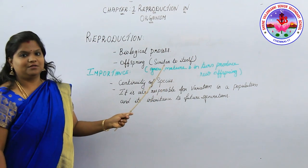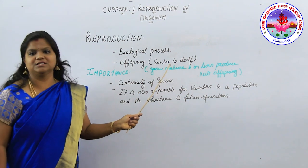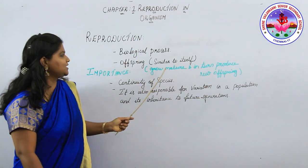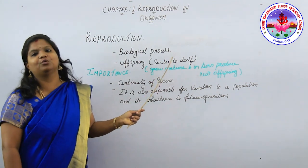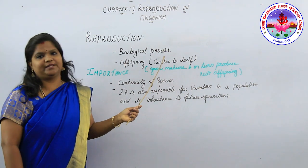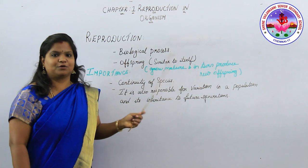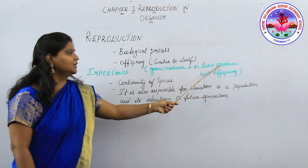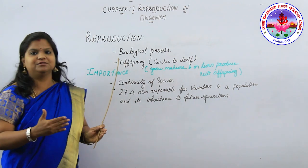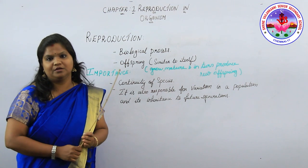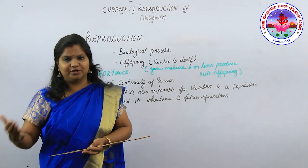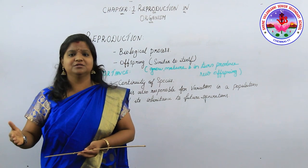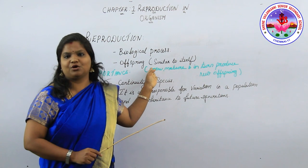Every offspring resembles its parent. In asexual reproduction, an exact copy of the parent is produced. In sexual reproduction, there is involvement of two gametes — male and female — so there will be variation. Offspring grow, mature, and in turn produce new offspring, continuing from generation to generation — grandfather, grandmother, then parents, then you, and so on into the future.